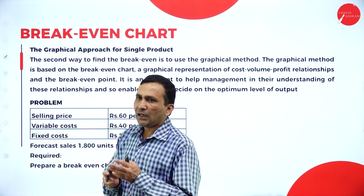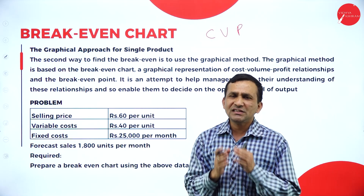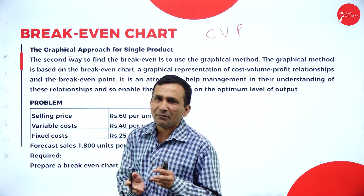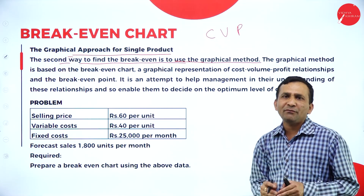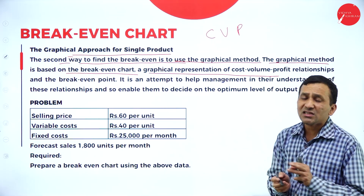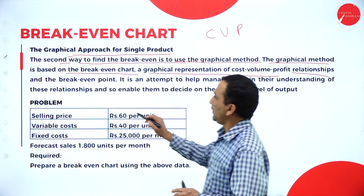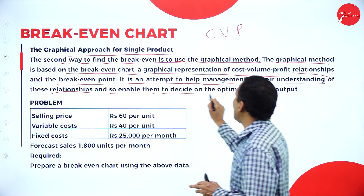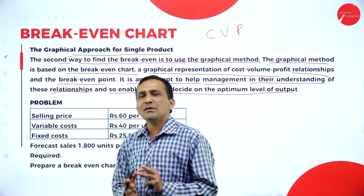Moving to the breakeven chart, also called a Cost-Volume-Profit (CVP) graph. The graphical method provides a clear visual picture and is a second way to find the breakeven point. It graphically represents the cost-volume-profit relationship and helps management understand this relationship to decide the optimum level of output and expected profit.